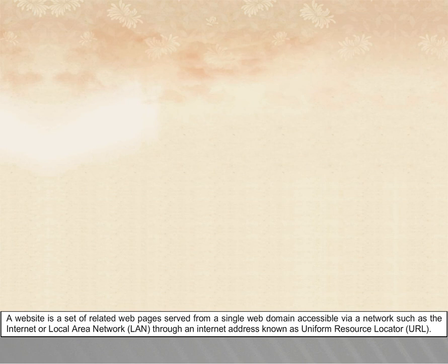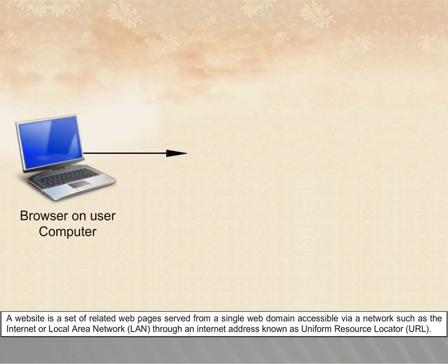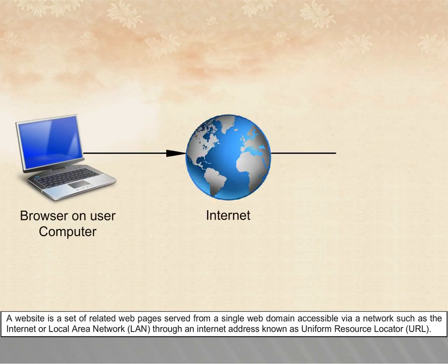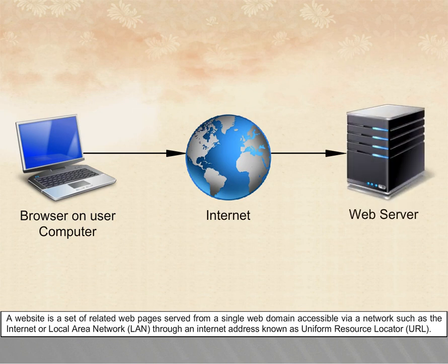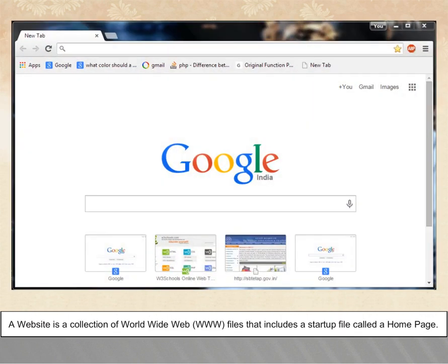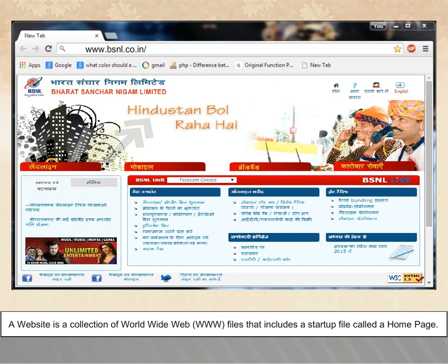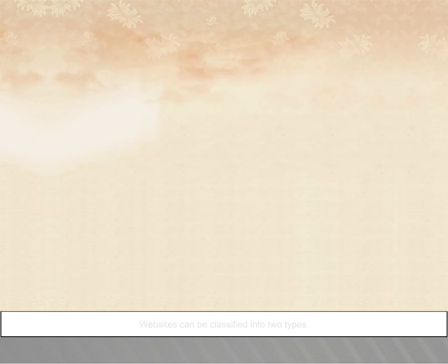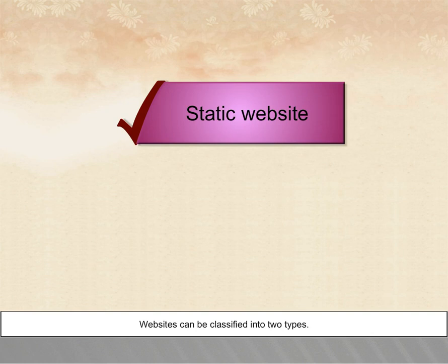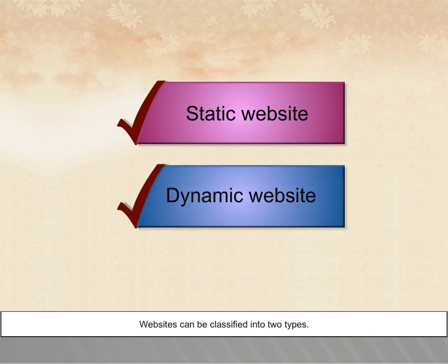A website is a set of related web pages served from a single web domain, accessible via a network such as the Internet or local area network (LAN) through an internet address known as Uniform Resource Locator (URL). A website is a collection of World Wide Web files that includes a startup file called a homepage. Websites can be classified into two types: static website and dynamic website.